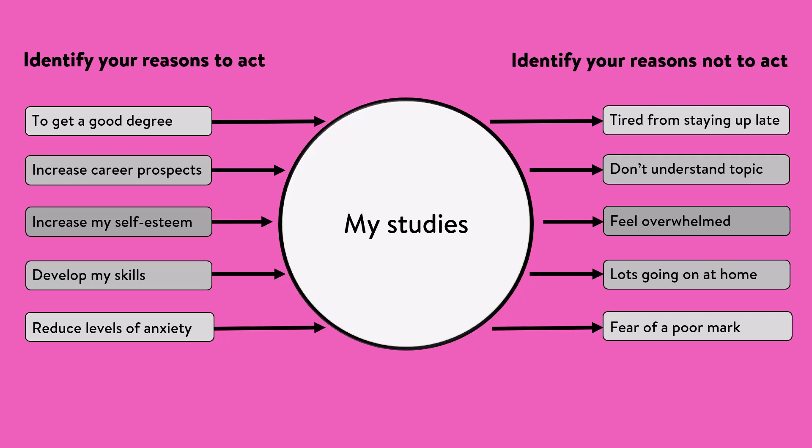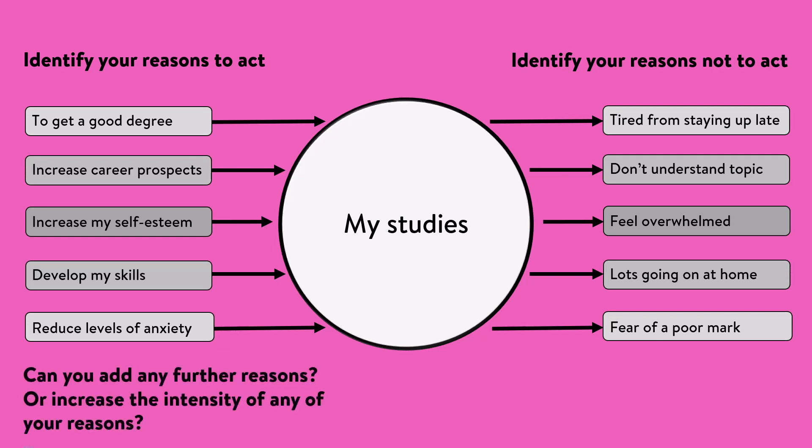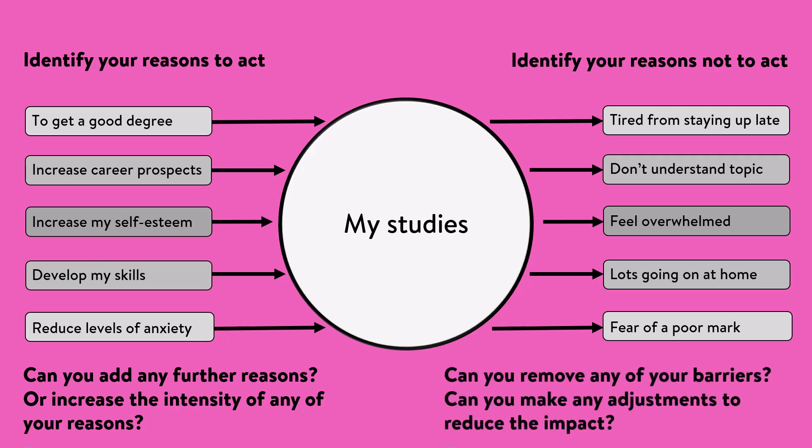Now you've identified your reasons to act, I'd like you to make a plan of action. Looking at your reasons to act column, is there any way to increase this by adding further reasons or intensifying the reasons already there? And looking at your reasons not to act, is there any way of removing any of these barriers?